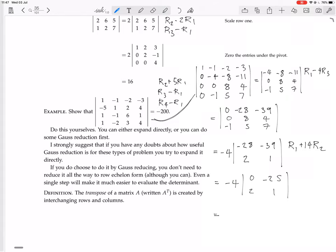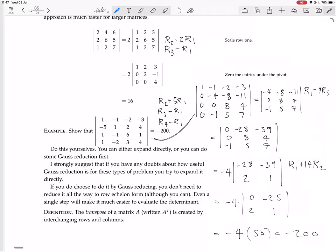Now the determinant of this is easy to calculate because it's just got one term. So it's going to be minus 4 times by minus 50. So we get minus 200. So that's how to calculate the determinants with Gauss reduction to help you. And I think I'll leave this video there. Thank you.